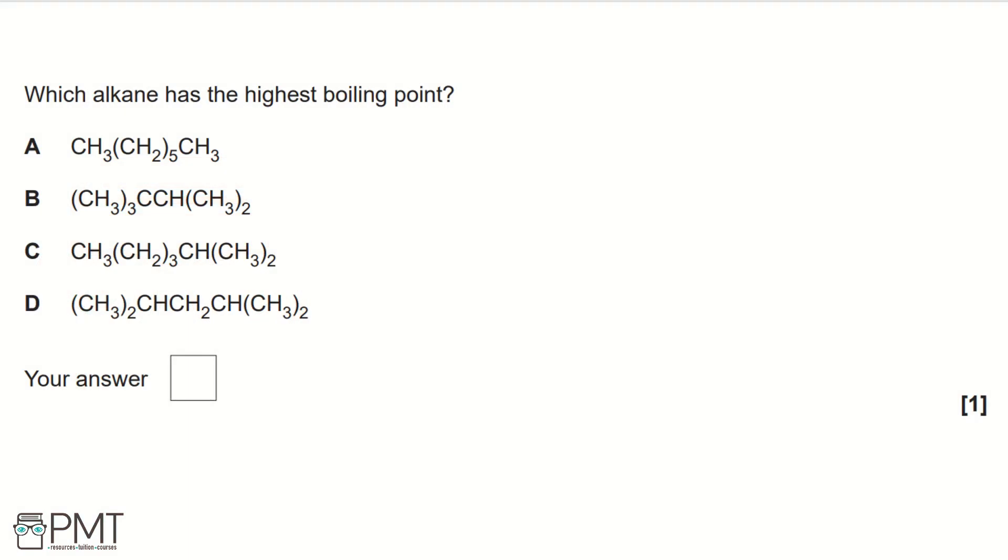Which alkane has the highest boiling point? A. CH3(CH2)5CH3. B. (CH3)3C-CH(CH3)2. C. CH3(CH2)3-CH(CH3)2. Or D. (CH3)2CH-CH2-CH(CH3)2.